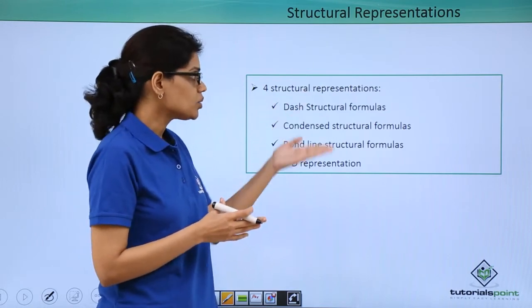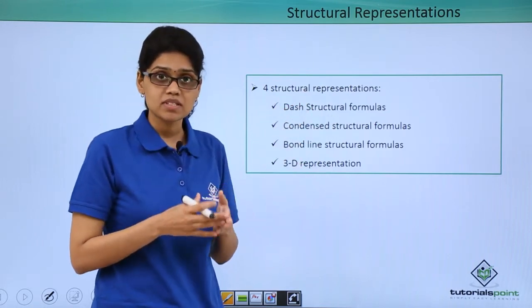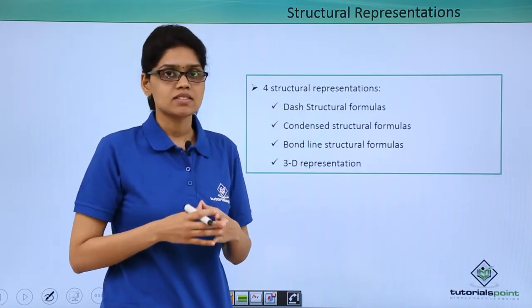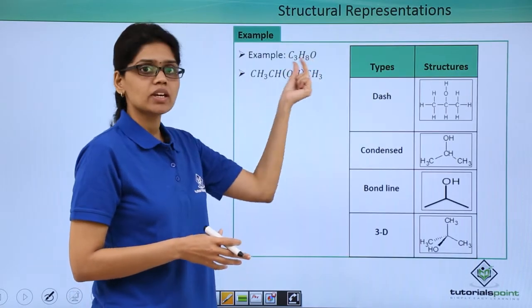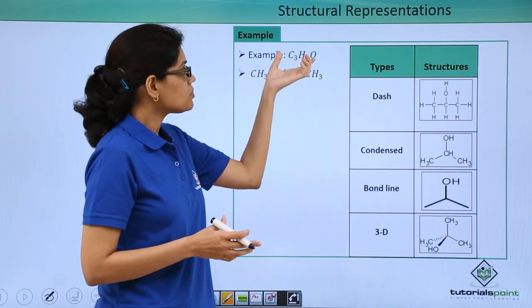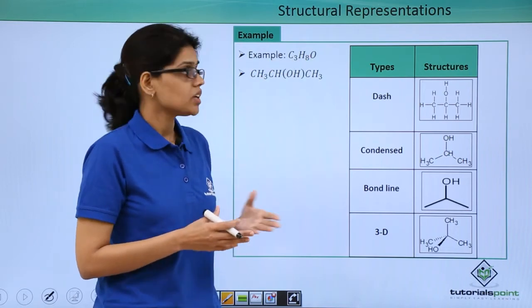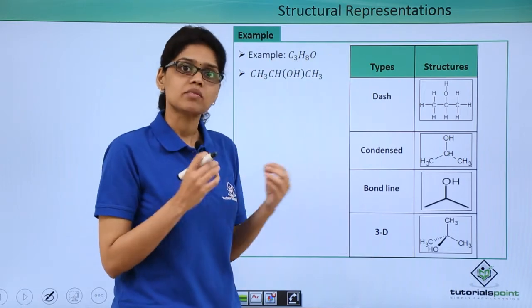Now, let's try to understand all the different ways of representations using a given example. In this example, we have taken C3H8O. How do we represent this particular molecule using different representations that we have just learnt?